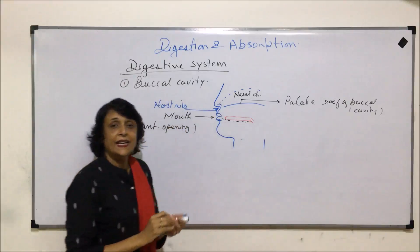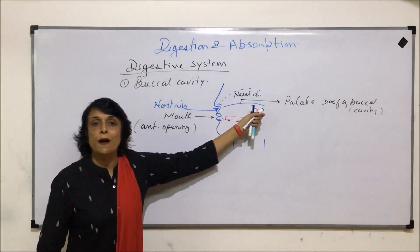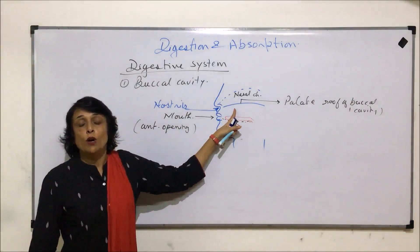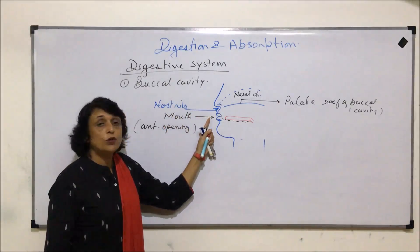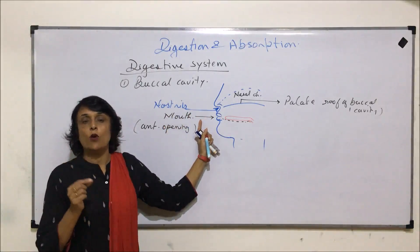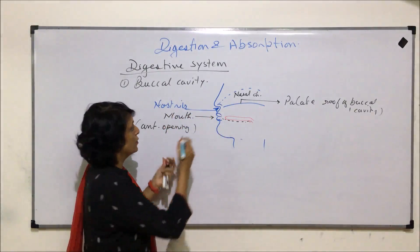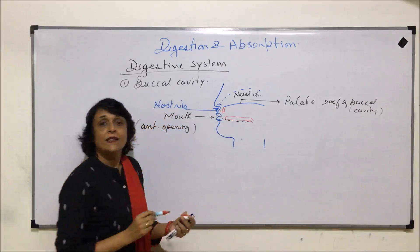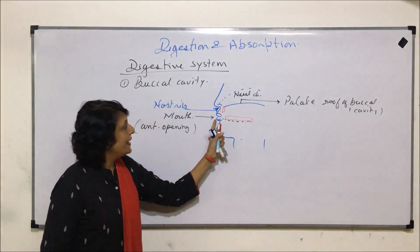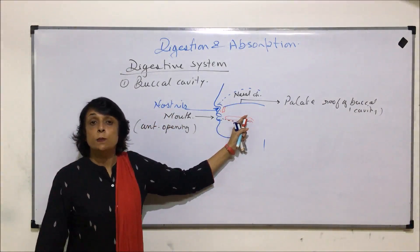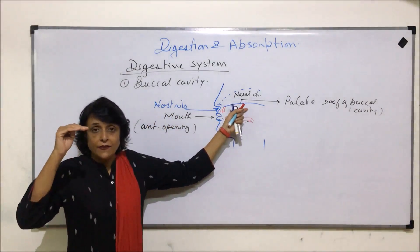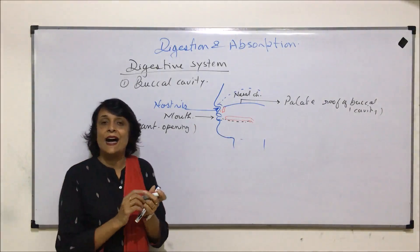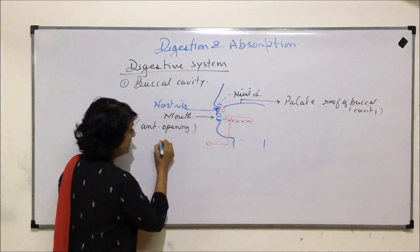The anterior part of the palate is bony and the posterior part is cartilaginous. So what exactly is the buccal cavity? The mouth opens into a small area called the vestibule, and then it opens into a space. This space has the palate at the roof, the tongue at the floor, and the two sides are the cheeks.